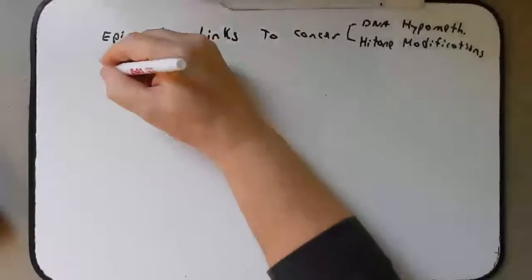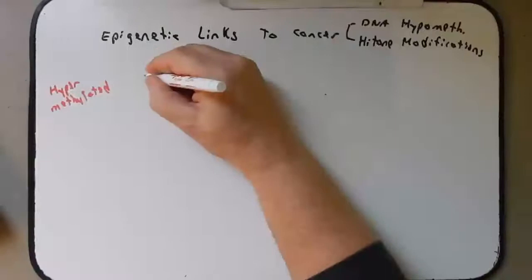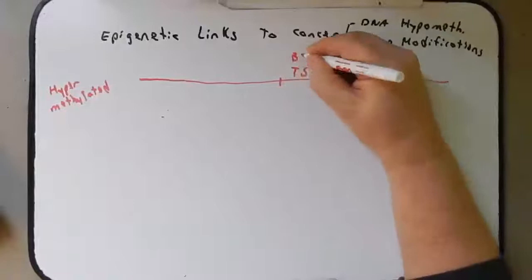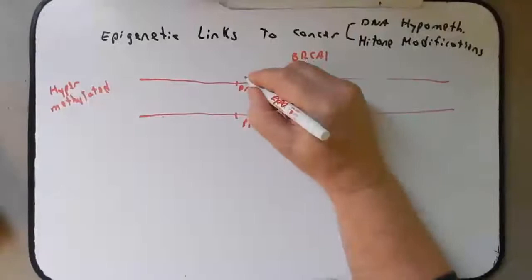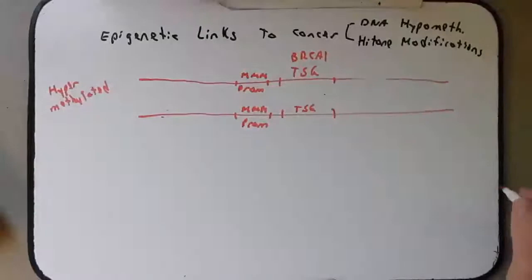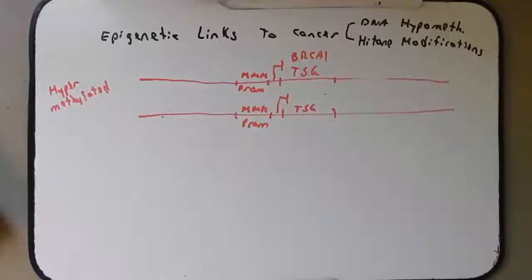Remember last time we said that if genes were hypermethylated, that could cause tumor suppressor genes to not be expressed. To remind you, we could have a tumor suppressor gene like BRCA1, with two copies and a promoter region upstream of it. If this promoter was hypermethylated on both alleles when it shouldn't be, that would cause these tumor suppressor genes to not be expressed, setting the stage for cancer.